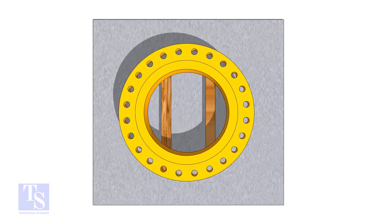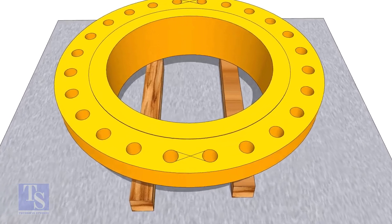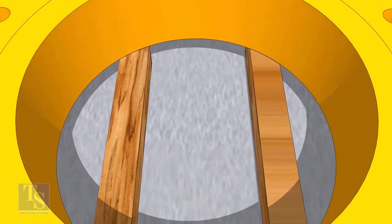In the second method, you need to mark the center line of the flange. Draw tangential lines on two adjacent holes on opposite sides.